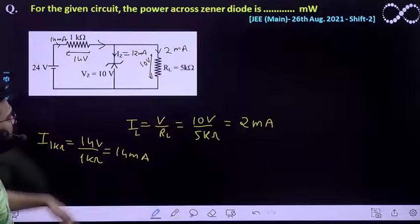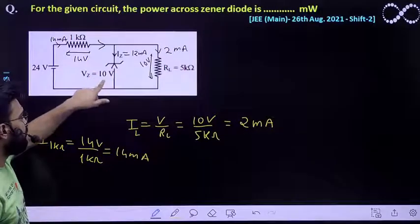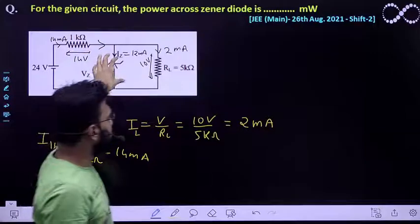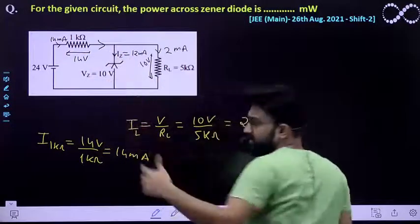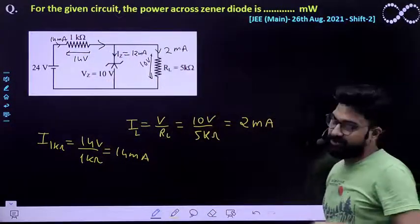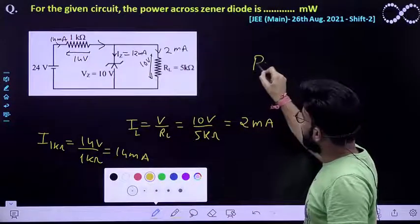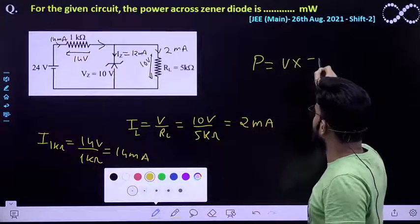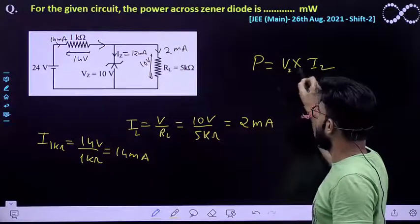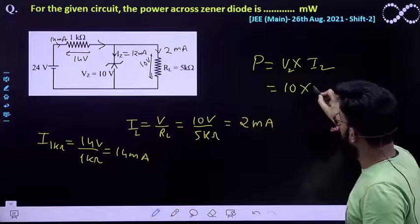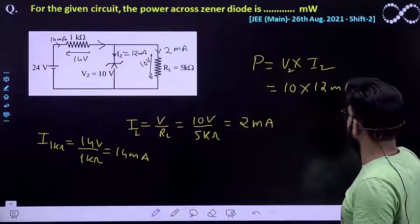Now we know the current across Zener diode and we also know the potential difference across it. So knowing these parameters you can easily find out the power across this Zener diode. So the power must be equal to, power must be equal to V into I, I Zener diode and potential over Zener diode which is 10 multiplied by 12 milliampere.